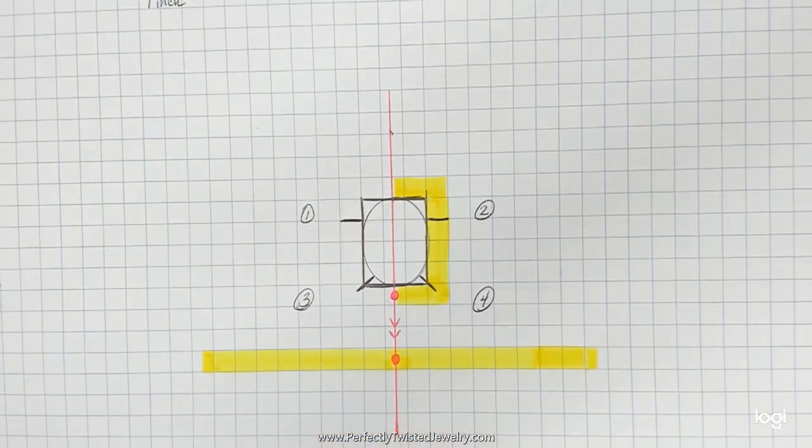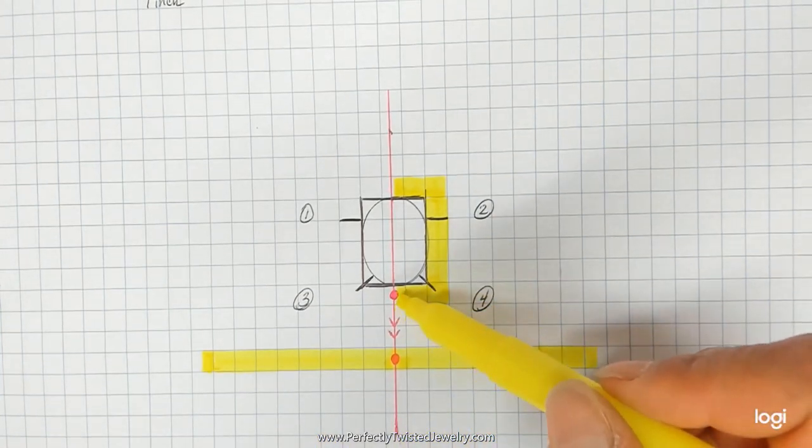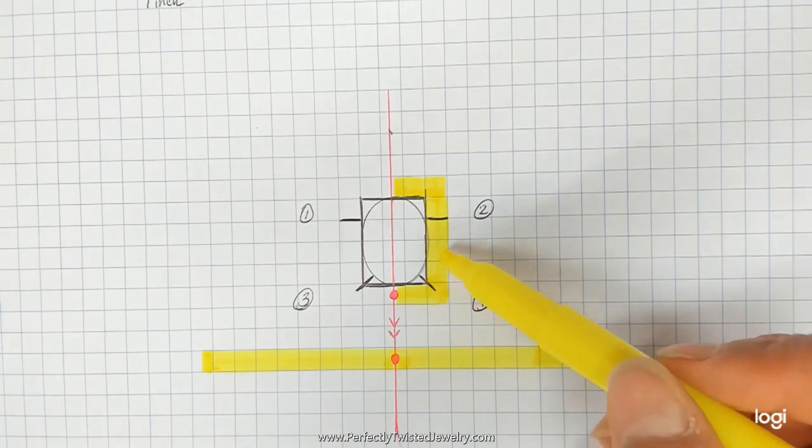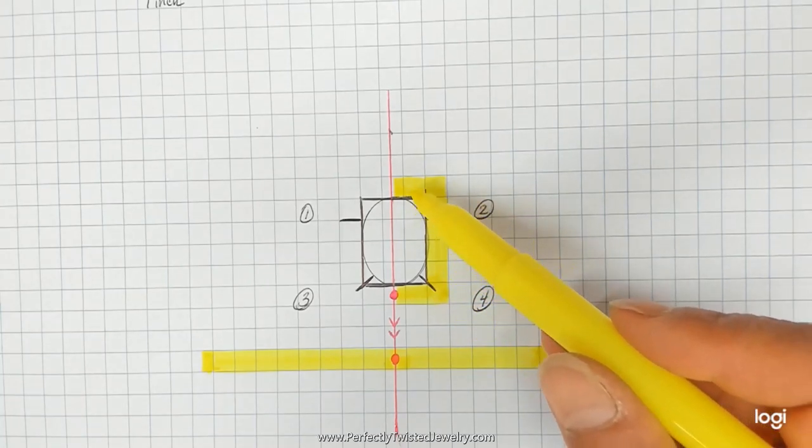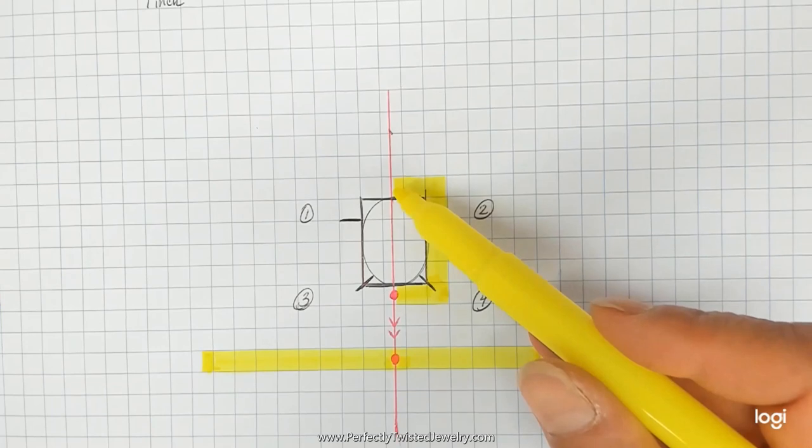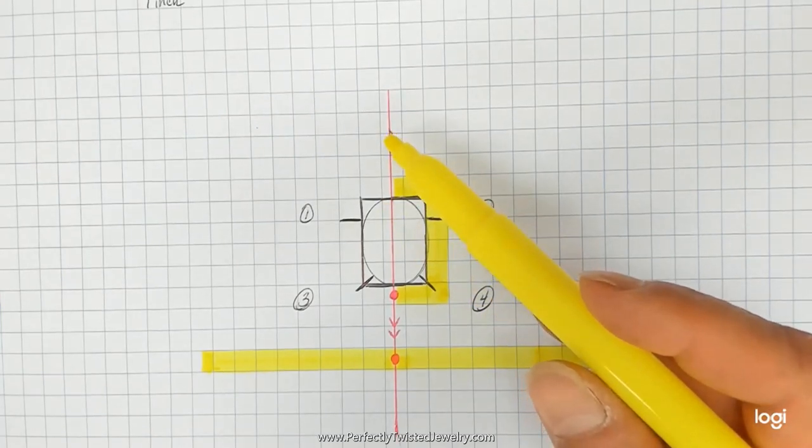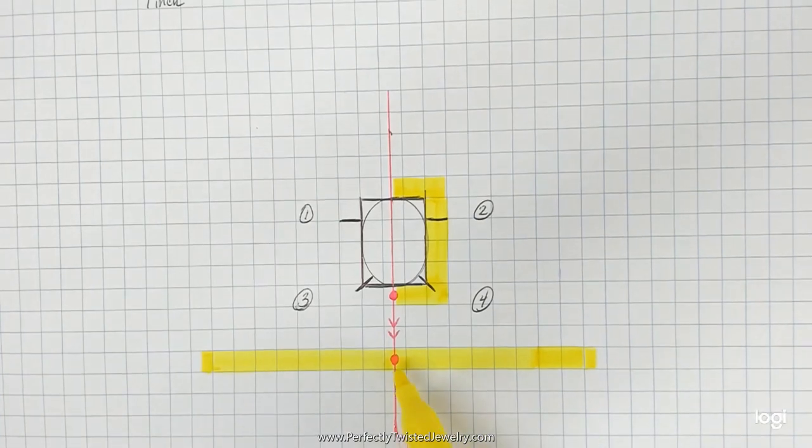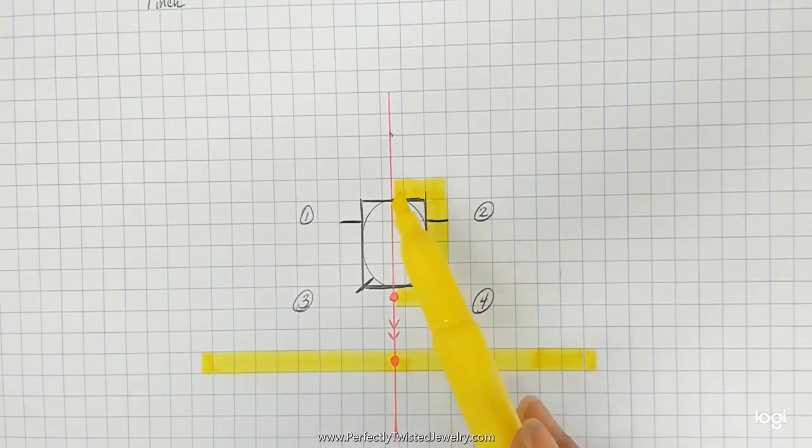From there, I can count squares basically to either side of the cab. So this is a half a square. Then there's one, two, three, four, five, six, seven, eight full squares and another half a square which brings me back to the top of the cabochon.